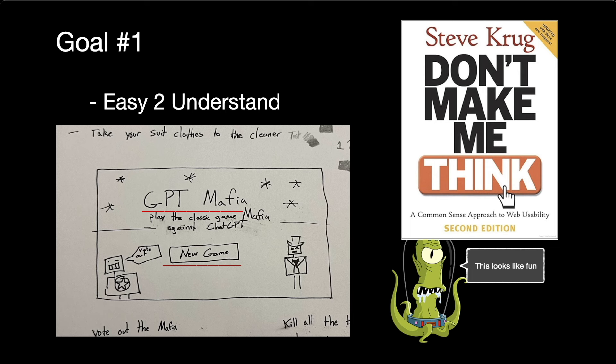Originally I was just going to have the title and nothing else, but I was worried that people might think it was just some random game that happened to be named Mafia, rather than THE Mafia — the one that they all know and love. So what I did is I added these little robot characters that say 'vote out the Mafia' and 'kill all the townspeople,' so you know exactly which game I'm talking about, and it confirms that this website is exactly what you think it is.